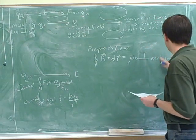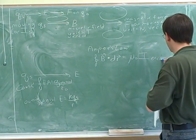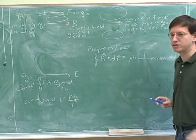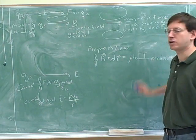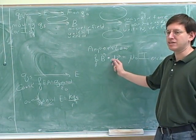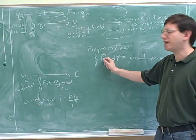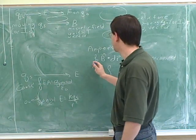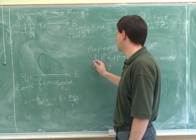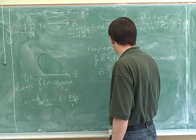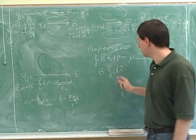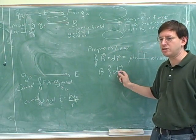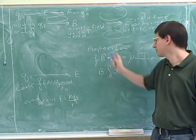So instead of saying enclosed, maybe I should say encircled. We draw a loop around the current and if we draw it symmetrically, the magnetic field will be uniform everywhere and you can take the B out of the integral. This circle here just means that we're taking this integral over a closed loop. Remember these are little distances along the loop, the Amperean loop.